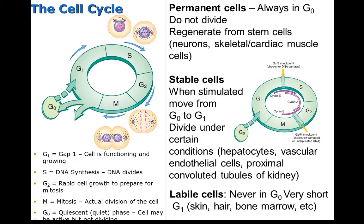Permanent cells like muscle cells, nerve cells, and cardiac muscle cells will remain in the resting phase of G0 — they can't undergo mitotic division. So cardiac muscle and nerve cells, like in brain injuries, will be replaced with fibrous scar.